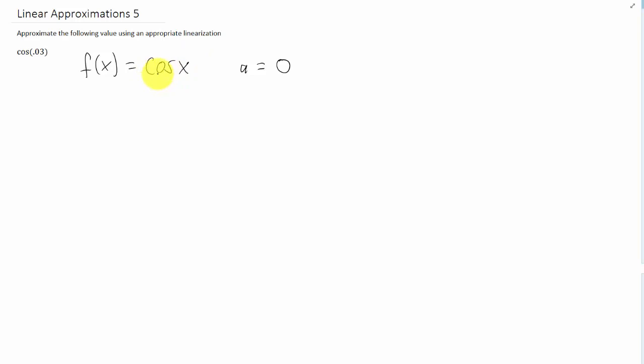We're going to approximate the function cosine of x at a equals 0 using a linearization or a line, and then we're going to plug the value x equals 0.03 into that line to approximate the value of this function. Let's see what happens.